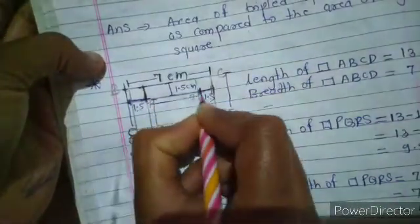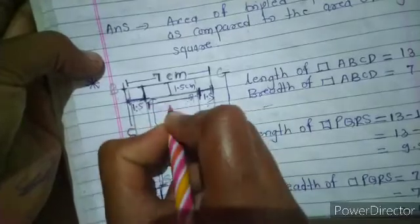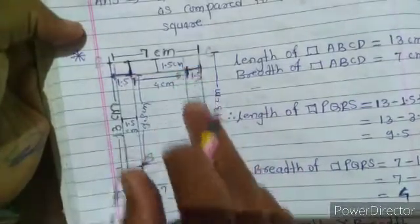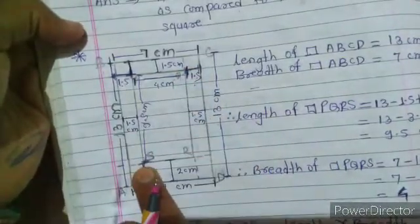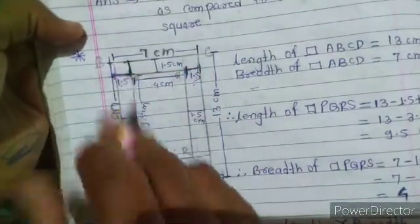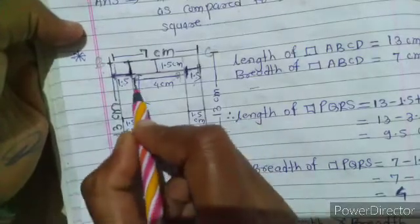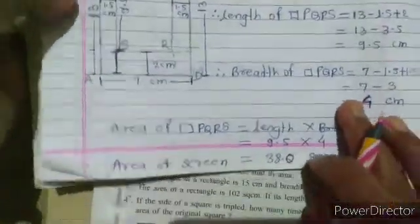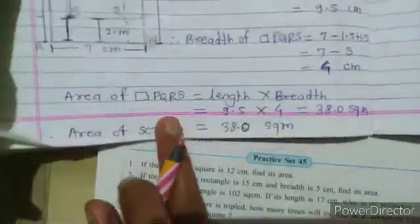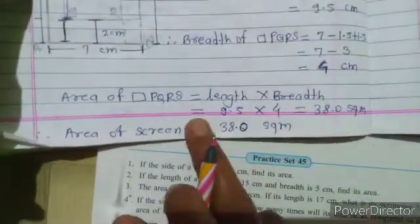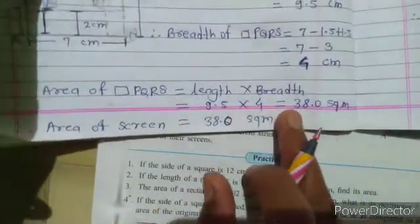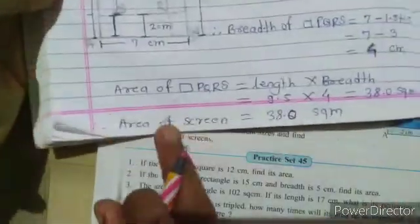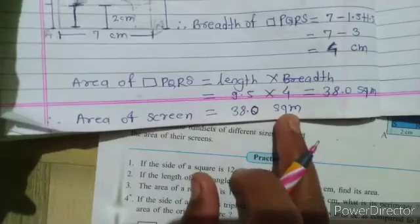PQ is 4 cm and PS is 9.5 cm. So the length of PQRS is 9.5 cm and breadth of PQRS is 4 cm. Now we can find out the area of PQRS. Area of PQRS equals length into breadth, which is 9.5 into 4. We get 38 square cm. So the area of the screen is 38 square cm.